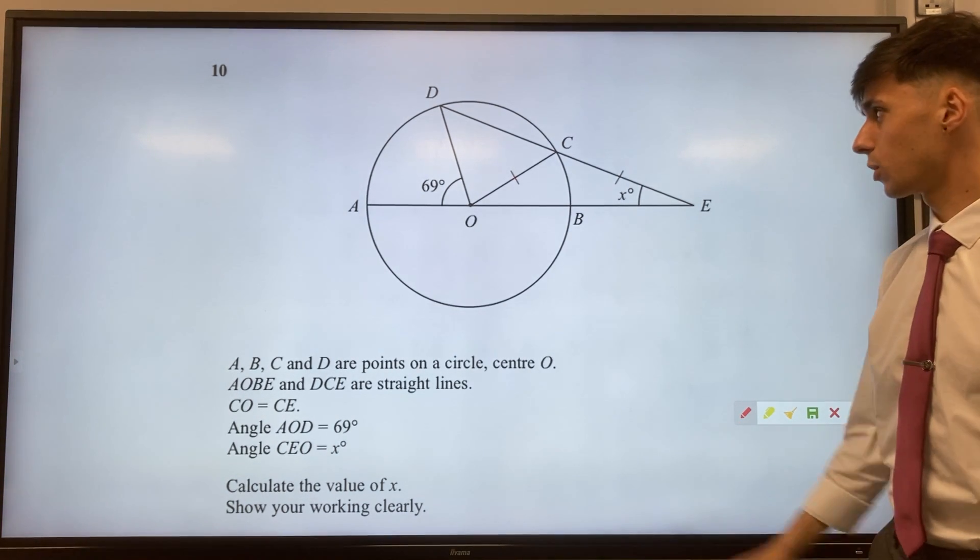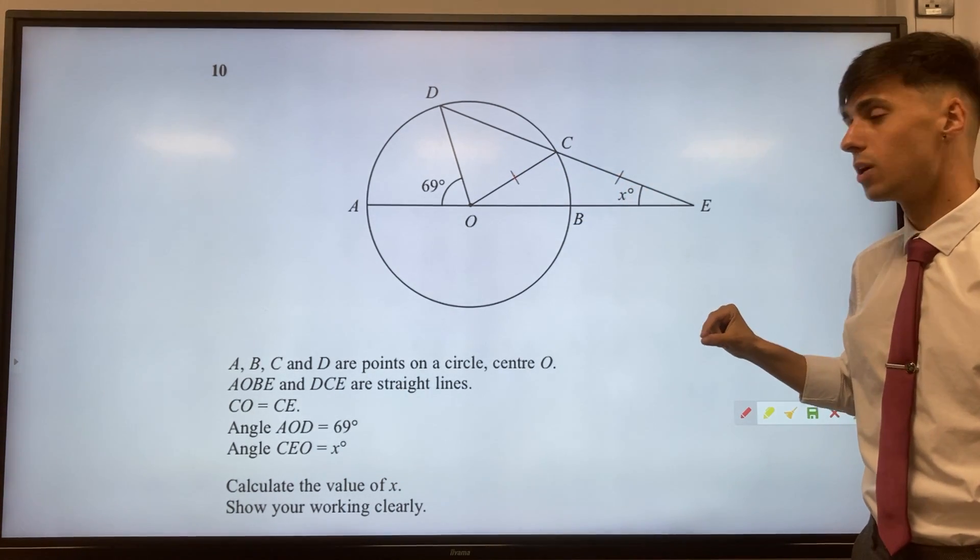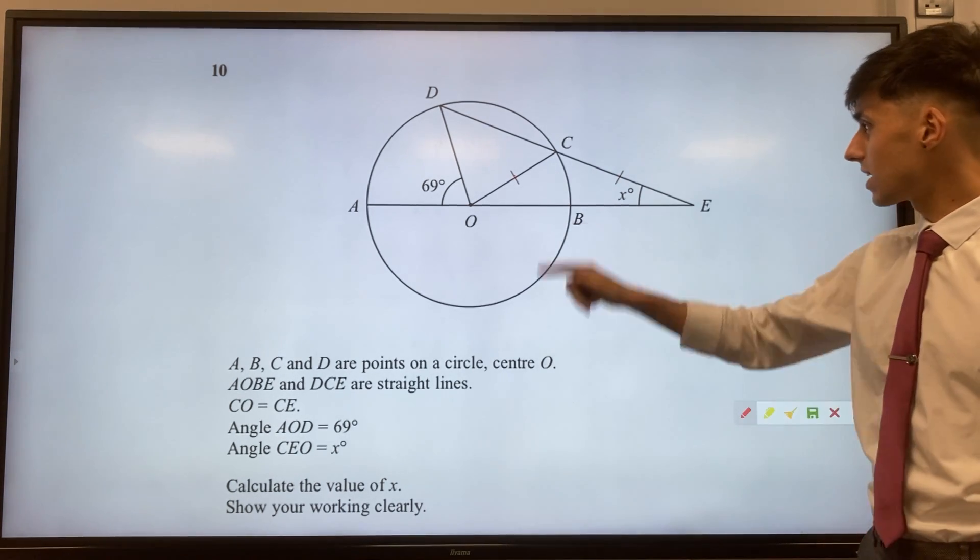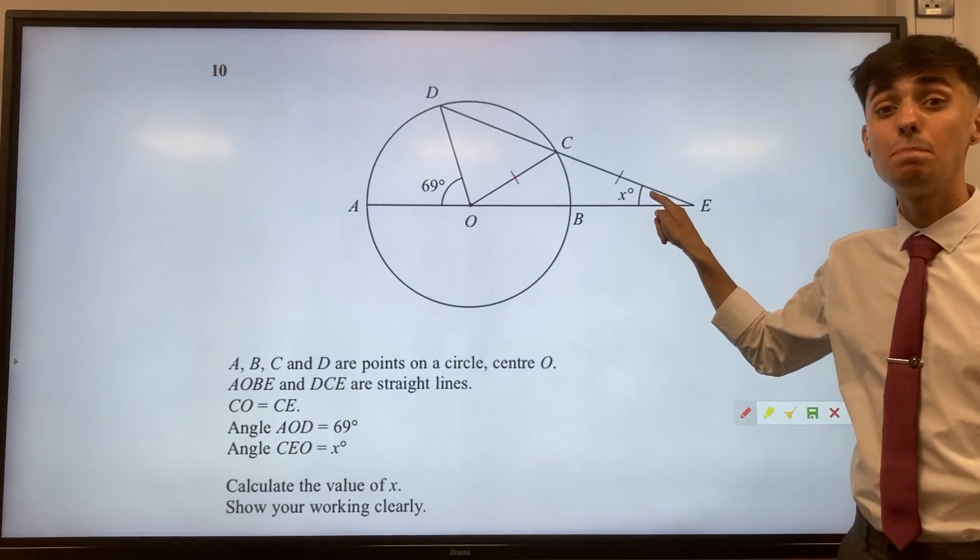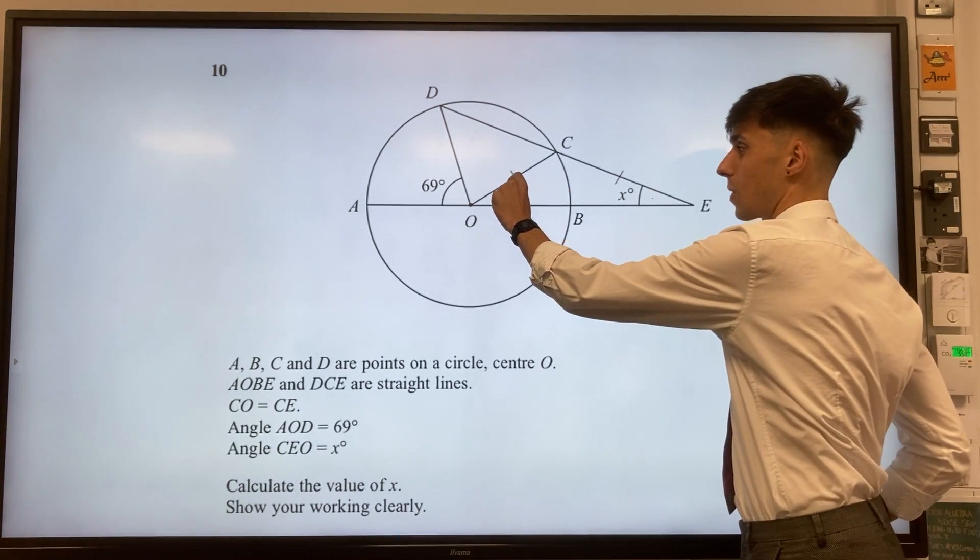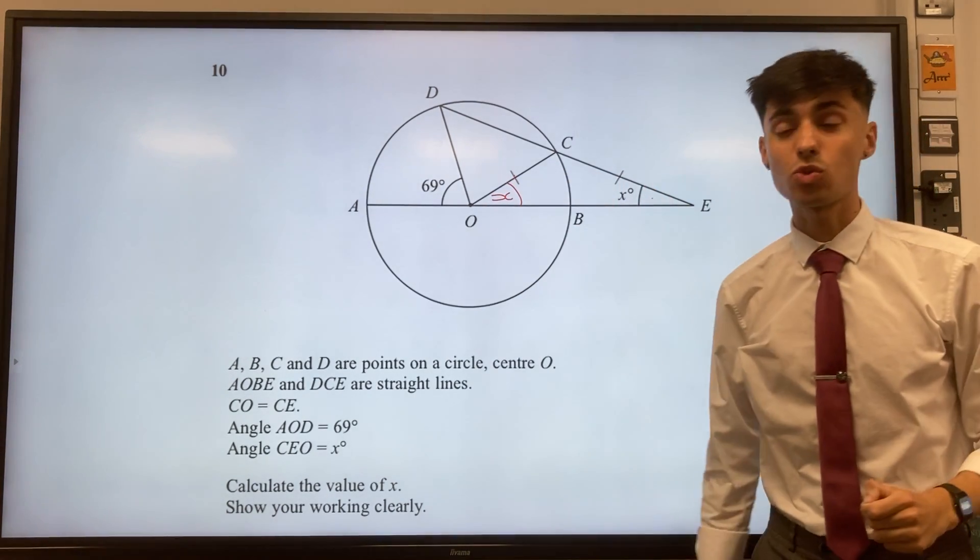First thing to note is that these two sides here are forming an isosceles triangle, so that means they must be equal. Moreover, it tells us if this angle here at the base of the isosceles triangle is x, well we can also add an x here, the other base angle of the isosceles triangle.